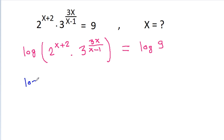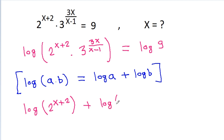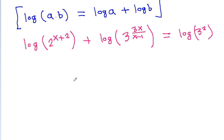And log of a times b is equal to log a plus log b. So, this will be equal to log 2 power x plus 2 plus log 3 power 3x by x minus 1 is equal to log of 9. And 9 is 3 squared, and log of a power x is equal to x times log a.